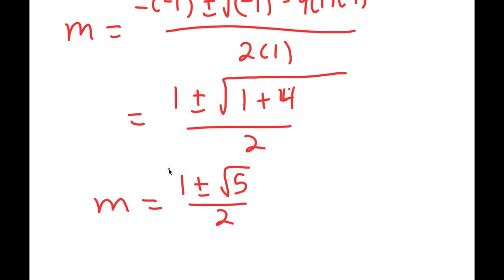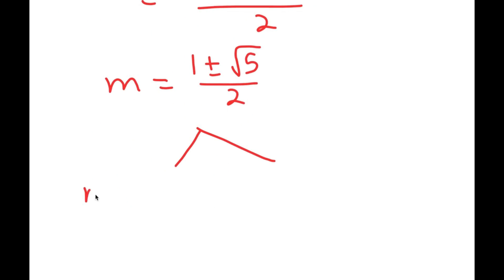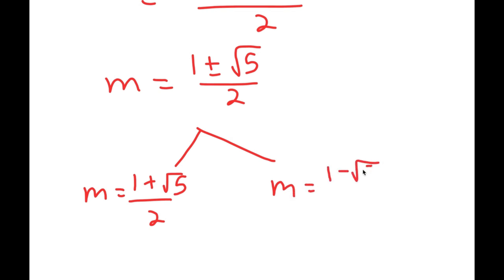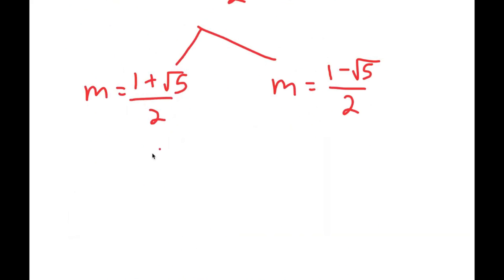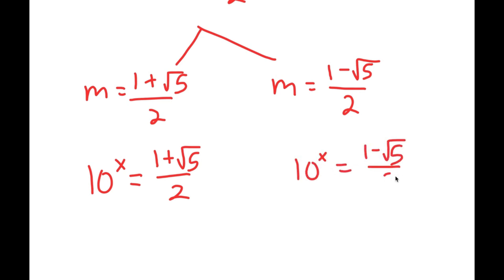So this is the value of m. The two values of m are 1 plus the square root of 5 over 2 and 1 minus the square root of 5 over 2. Now, remember how we let m equal 10 to the power of x. For the second equation, 10 to the power of x is equal to 1 minus the square root of 5 over 2, which is a negative number. You can't take the power of a positive number and make it equal negative, meaning there's no solution to this equation.